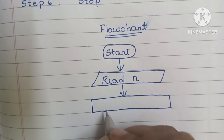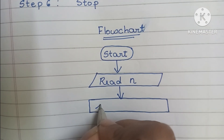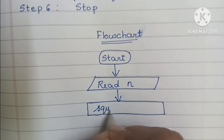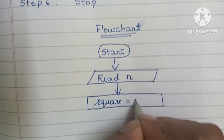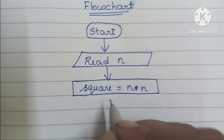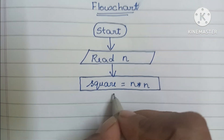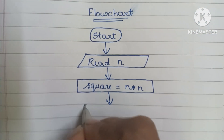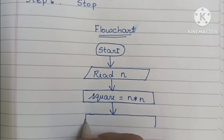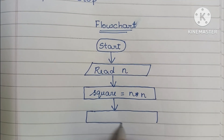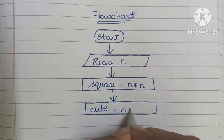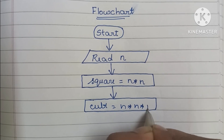We have to draw a rectangular shape. Within that, we have to find the square value — square = N × N. This is the formula to find the square of a number. Next, we have to find the cube of a number, also written within a rectangular shape — cube = N × N × N.